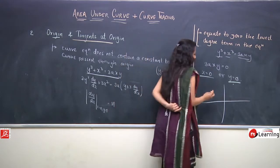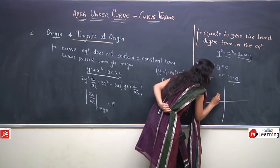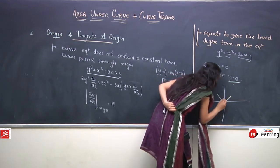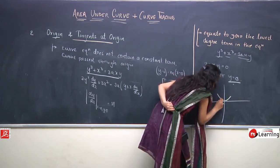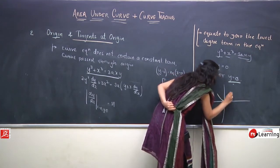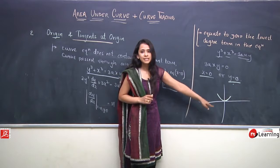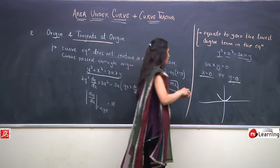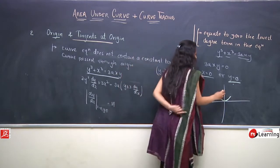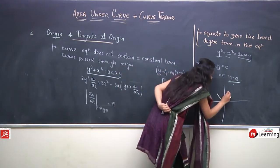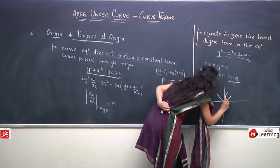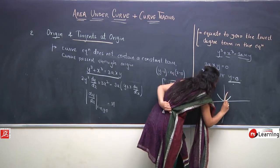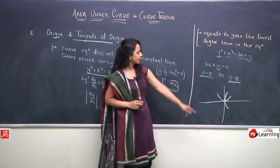If the x-axis is tangent at origin, the curve touches it there. And since y-axis is also a tangent, the curve touches both axes at origin. So the curve will look something like this near origin, touching both the x-axis and y-axis.